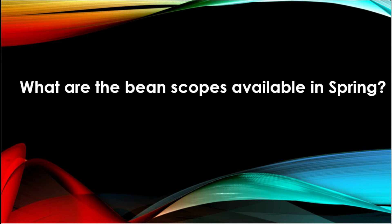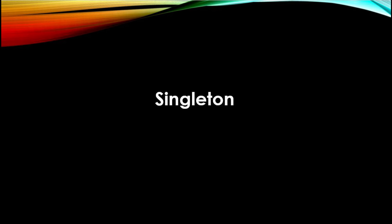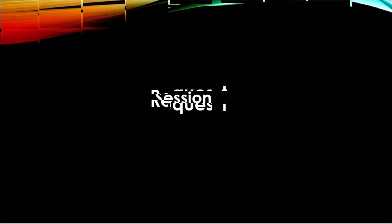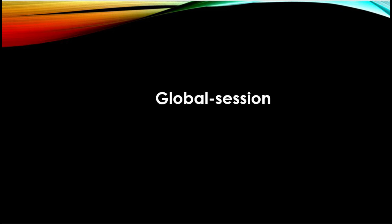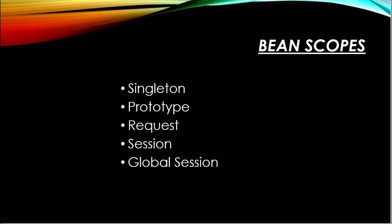What are the bean scopes available in Spring? Spring framework supports 5 scopes. The first one is Singleton: the scope of a bean definition using this would be a single instance per IoC container. Next is Prototype: the scope for a single bean definition can be any number of object instances. Next is Request: the scope of the bean definition is an HTTP request. Next is Session: the scope of the bean definition is an HTTP session. And the last one is Global Session: the scope of the bean definition is a global HTTP session. Request, session, and global session are the three scopes that are available only if the users use web application context containers.